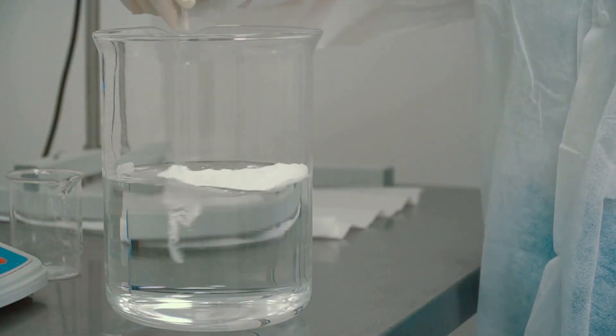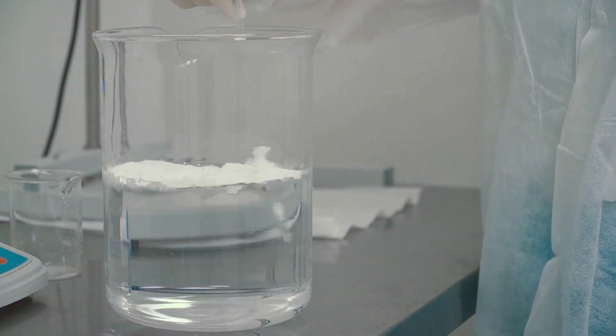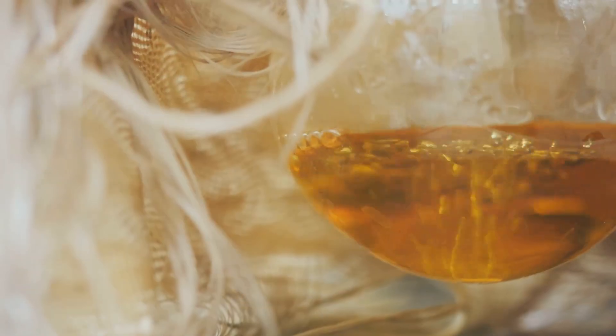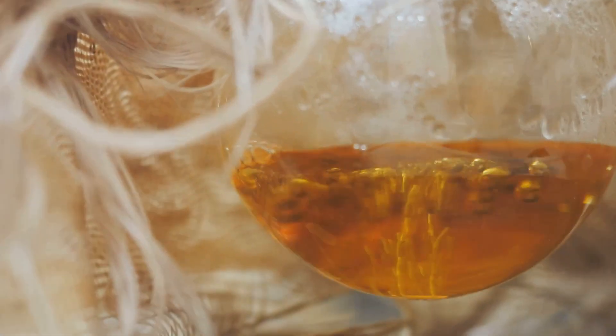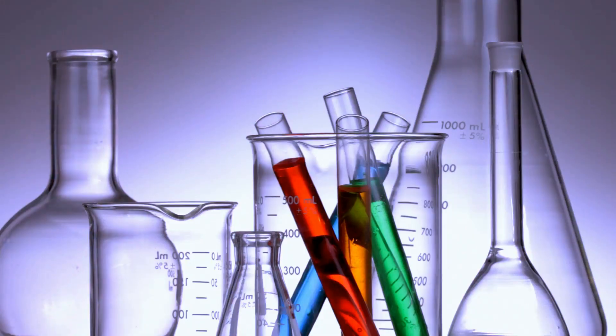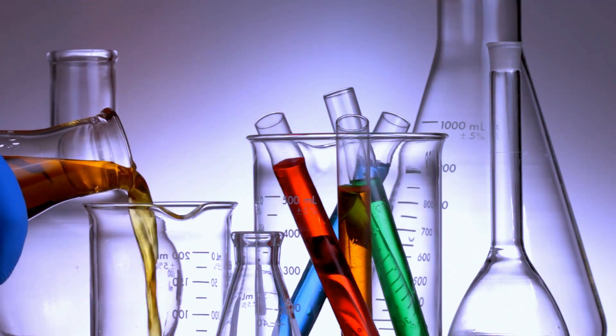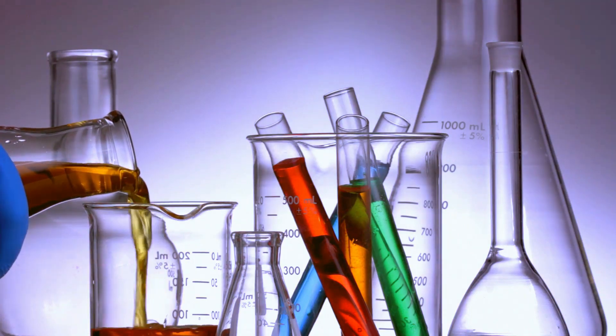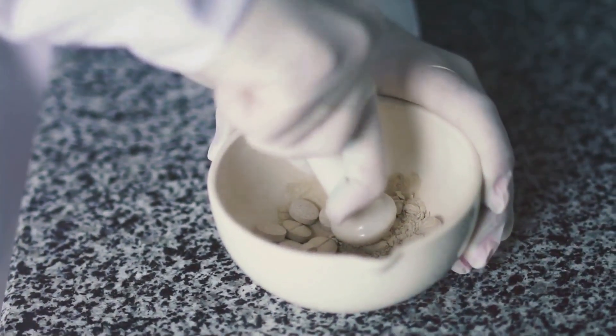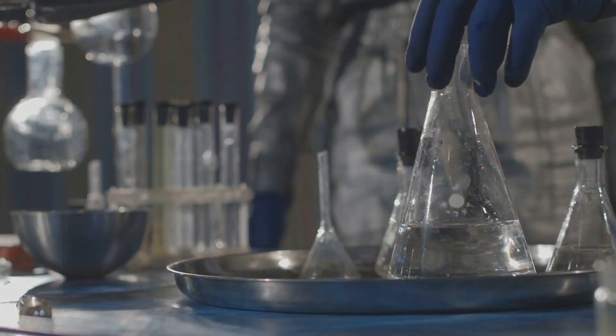When added to the aqua regia solution, sodium metabisulfite reacts with the gold ions, converting them into metallic gold particles. You'll see the solution turn a cloudy brown as the gold precipitates out. This process can take a few hours, so be patient. Once the precipitation is complete, you should see a brownish sludge settled at the bottom of your beaker. This sludge is mostly metallic gold. We're getting closer to our goal.